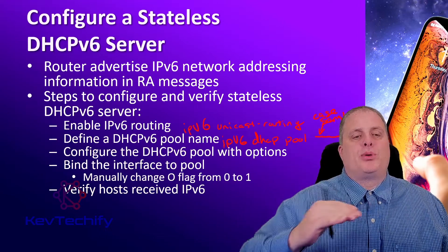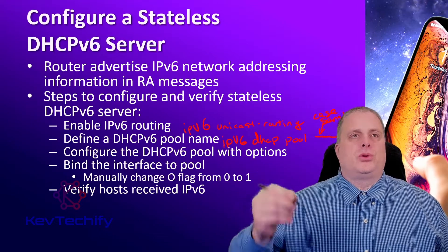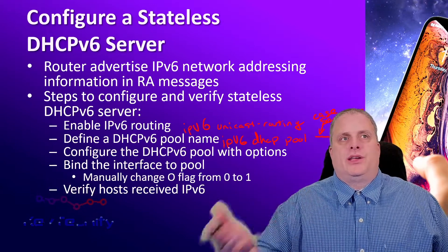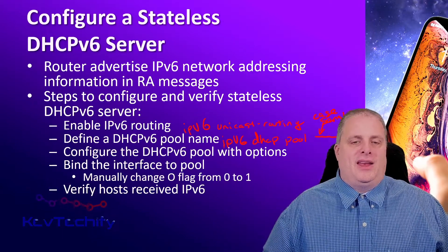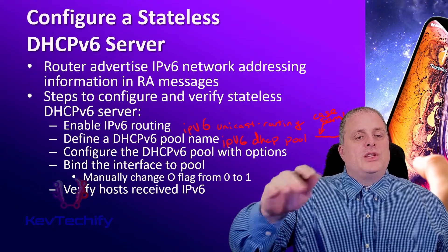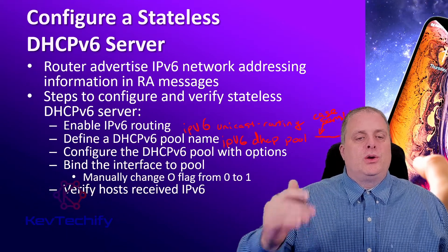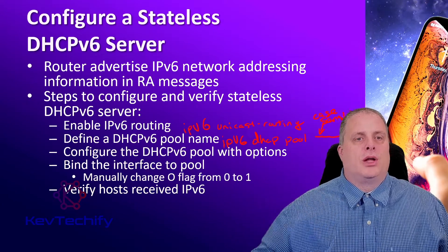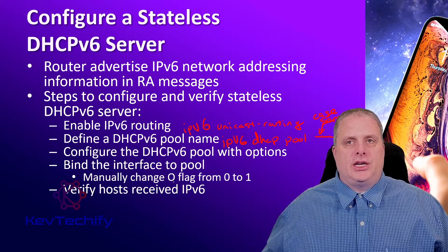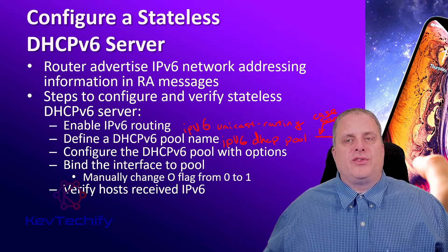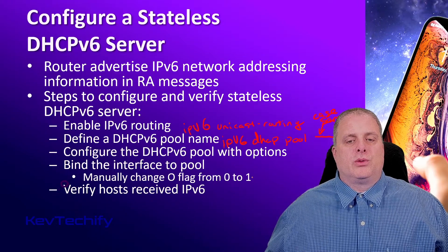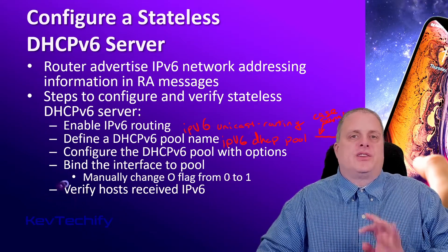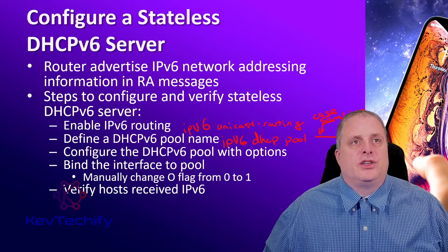Once you're into that pool, you can configure it with the different options — like what your DNS server is or what your domain name is. Then, once you have your configurations done, you go and bind that interface to that pool. That's where we go in and manually change the O flag — the other configuration flag — from a 0 to a 1. There's an IPv6 ND command you have to enter to do that.